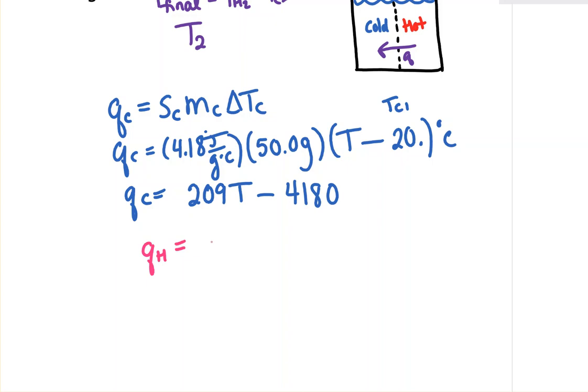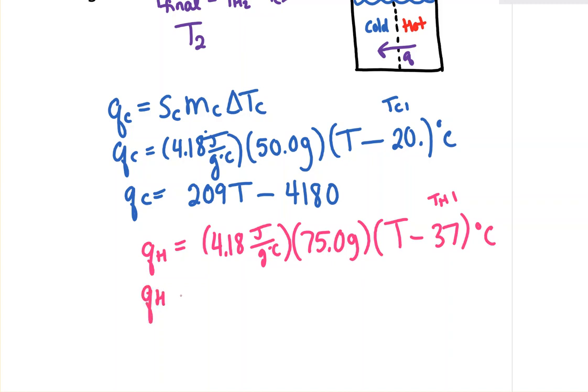This is T-hot 1. We multiply through to distribute and get q_H equals 313.5T minus 11599.5.